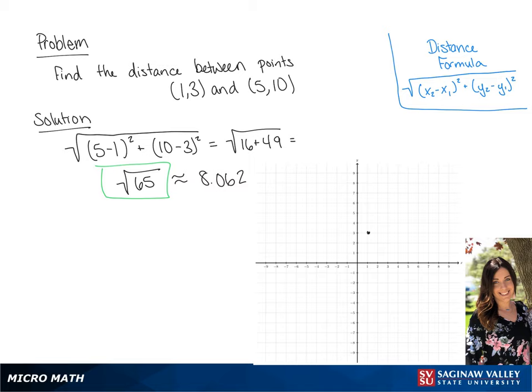We're going to graph our line by using the points in our original problem. Now we can draw our line. And the distance between these two points is the square root of 65.